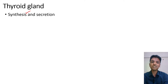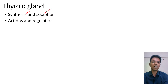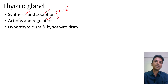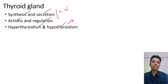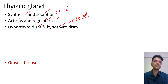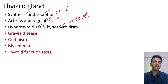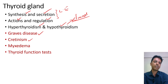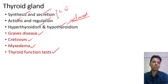Next, move to the thyroid gland — a very important gland. Topics include the synthesis and secretion of thyroid hormones, the actions of T3 and T4, and how they are regulated. These combined could form long essay questions. Extremely important are the clinical conditions: hyperthyroidism and hypothyroidism, which can be asked as clinical case scenarios. Less important but still possible: Graves' disease, cretinism, myxedema, and thyroid function tests — which are usually asked in biochemistry but may appear in physiology.